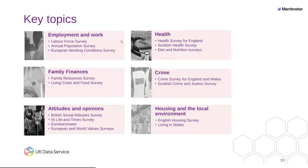The key topics we hold cover a wide range. In terms of employment and work, we have the Labour Force Survey, which is the main survey, and aligned with that is a larger survey — the Annual Population Survey, which has less information in it. Other datasets such as the European Working Conditions Survey are also there. In terms of health, we have the Health Survey for England, the Scottish Health Survey, and Diet and Nutrition Surveys, amongst others. In terms of family finances, we have the Family Resources Survey and Living Costs and Food Survey. We hold the Crime Survey for England and Wales and the Scottish equivalent. One of the examples we're going to use is the British Social Attitudes Survey. There's also the Northern Ireland Life and Times Survey. In terms of housing and the local environment, we have the English Housing Survey.